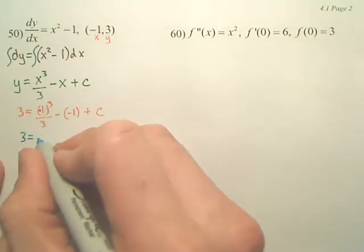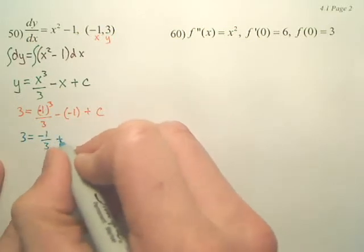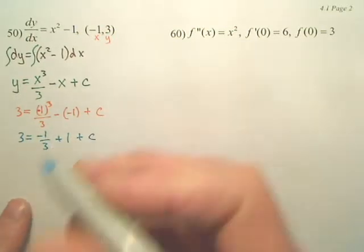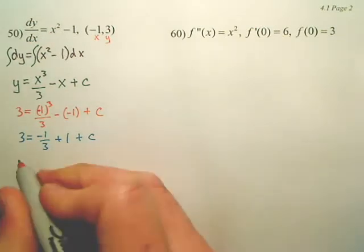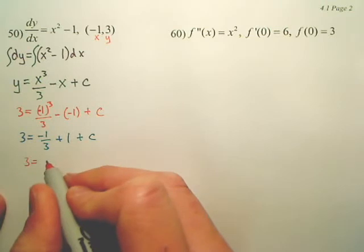I have 3 equals negative 1 third plus 1. So I now have 3 equals 2 thirds.